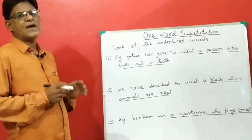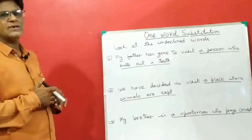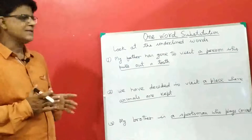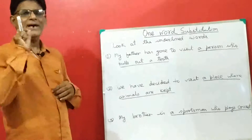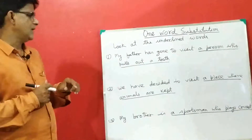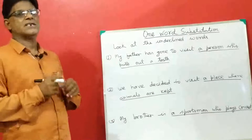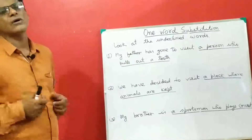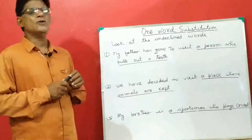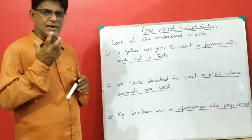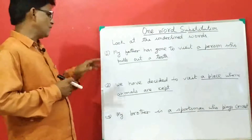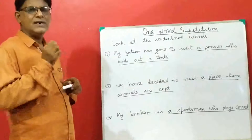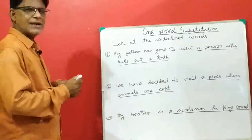In the first sentence, the underlined group of words are 'a person who pulls out a tooth.' Can we replace the group of words by a single word? Is it possible? Yes, it is possible. A person who pulls out a tooth is called a dentist. So we can replace the underlined words by the word 'dentist.'